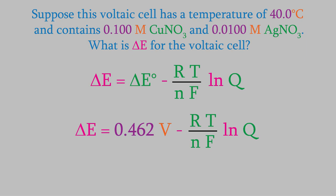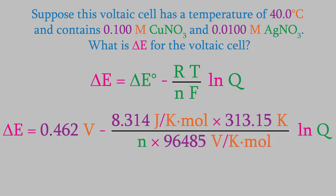We already figured out delta E zero. As we saw a few minutes ago, it's 0.462 volts. T is the temperature, which is now 40.0 Celsius, or 313.15 kelvin. And as we can see from the half reactions, N is 2.